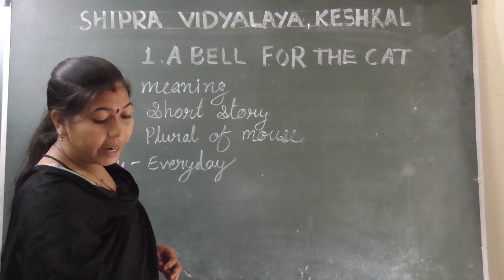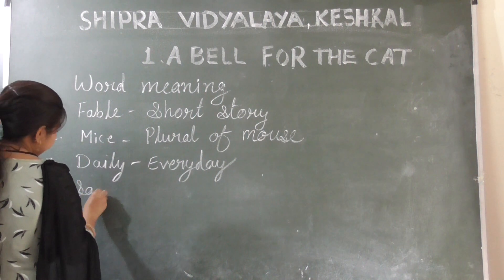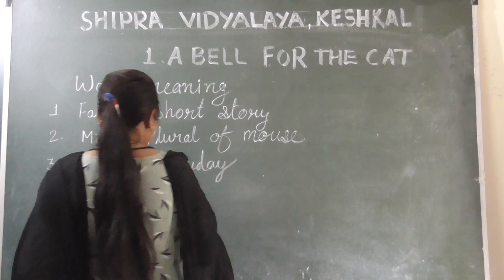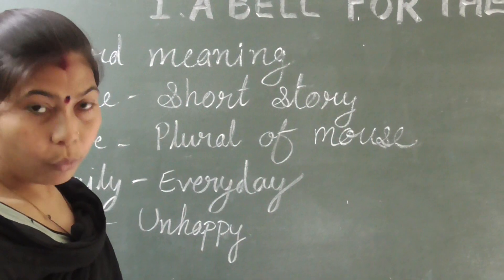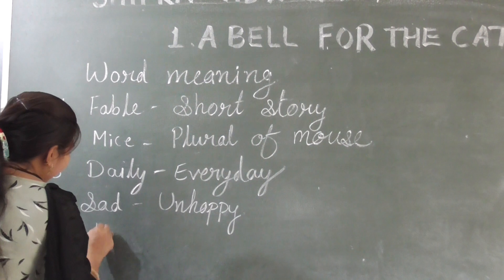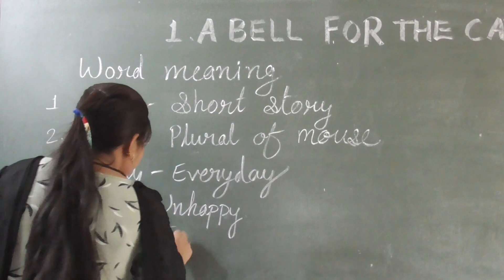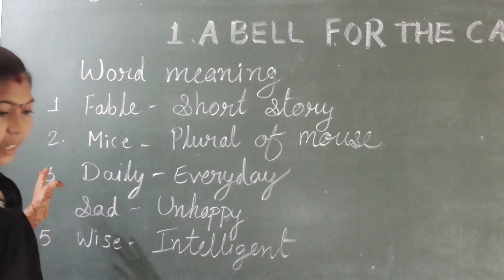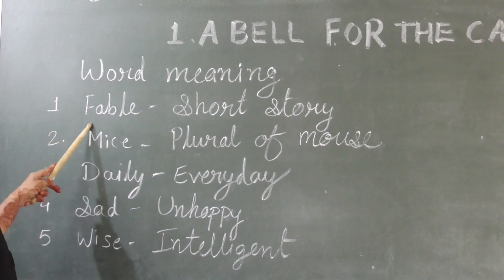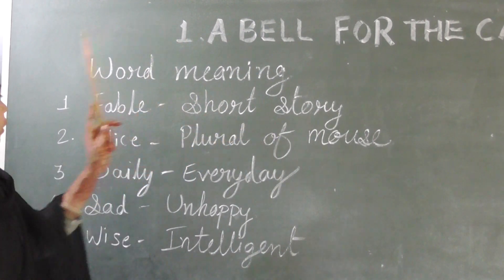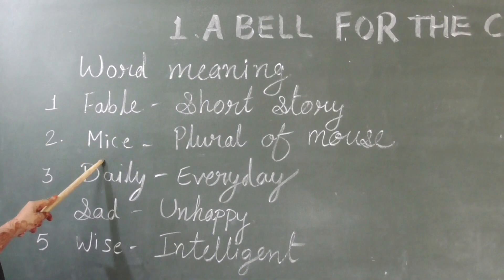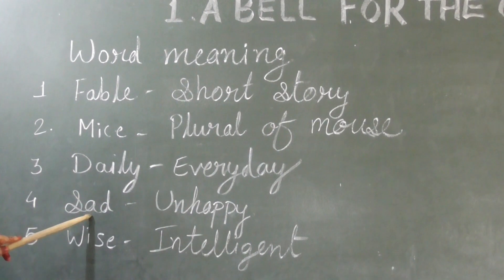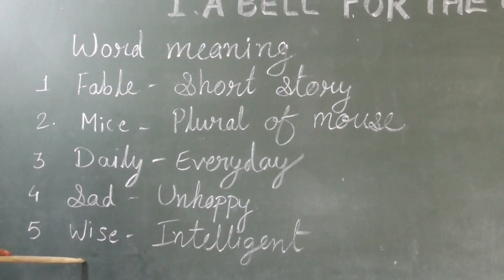Next word: sad, S-A-D. Sad means unhappy. Next word: wise, W-I-S-E. Wise means intelligent. Let's review — fable means short story; mice is a plural of mouse; daily means every day; sad means unhappy; wise means intelligent.